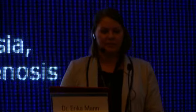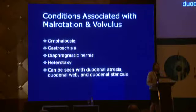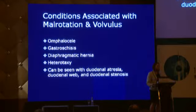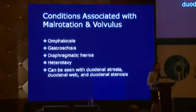Conditions associated with malrotation and volvulus include omphalocele, gastroschisis, hernias, heterotaxy, and diaphragmatic hernia — because the bowel has not had the chance to be fixed appropriately, mesenteric fixation is absent and the bowel is free to move. Also associated are duodenal atresia and duodenal web. So don't stop looking for things once you've found one abnormality.